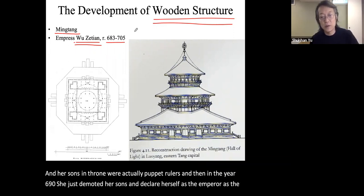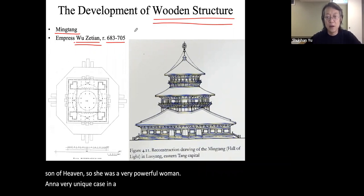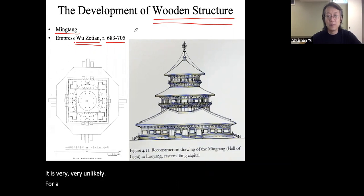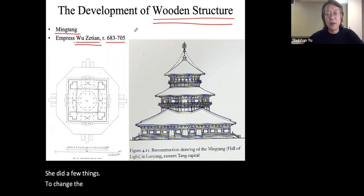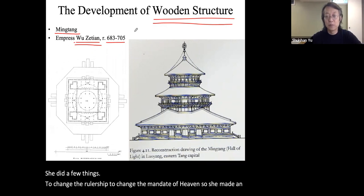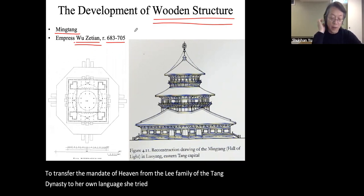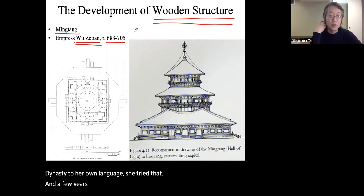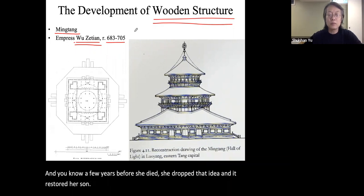She was a very powerful woman and a very unique case in Confucian society, where it was very unlikely for a lady to become Son of Heaven. She made an attempt to transfer the mandate of heaven from the Li family of the Tang dynasty to her own lineage. However, a few years before she died she dropped that idea and restored her son to become emperor again.